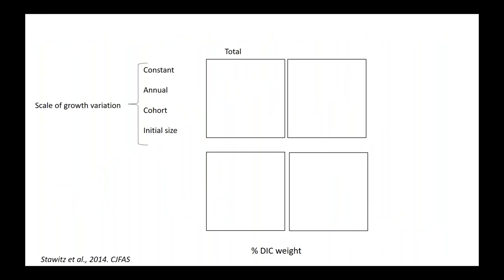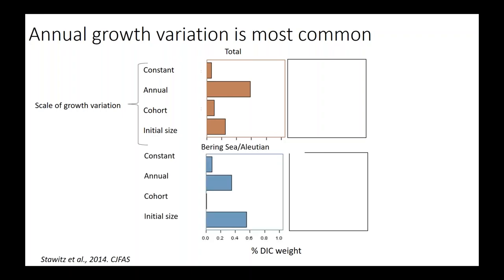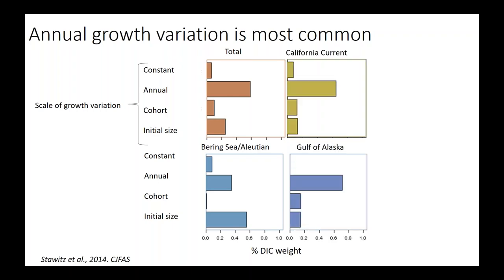I'll show the results as the percentage of model selection weight given to each of the four model types—constant, annual, cohort, and initial size variation—across each ecosystem. Across all ecosystems, annual variation in size was most commonly chosen by model selection, with initial size variation a close second. The Bering Sea and Aleutian Island ecosystem was the only one where initial size effects were chosen for a larger percentage of species, whereas for the California Current and Gulf of Alaska, annual scale variation was chosen more often.